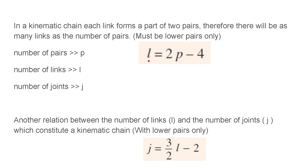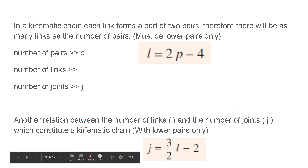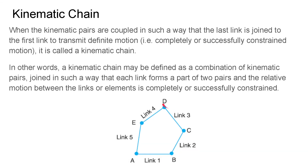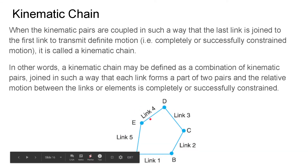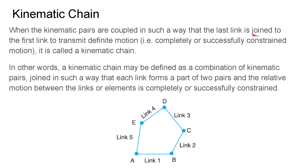Between two joints we have a link. Another relation is between the number of links and number of joints, also with lower pairs only, where the number of joints equals 3/2 · l − 2. We will use these two relations to define whether a given system makes a kinematic chain or not — that is, whether the kinematic chain is able to transmit motion.